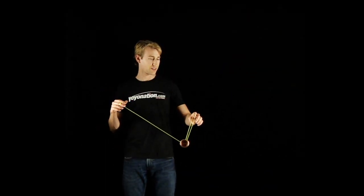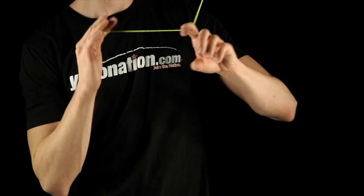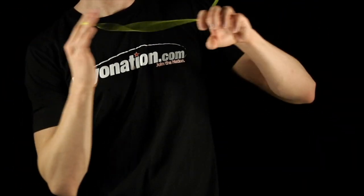The simplest hop starts with the trapeze mount. After you are in the trapeze mount, you pop the yoyo in the air and catch it in trapeze mount again.